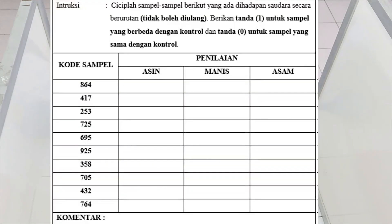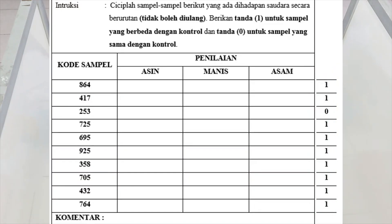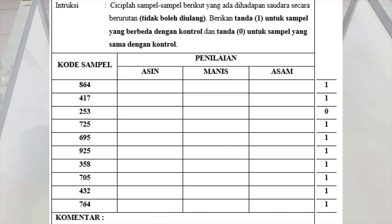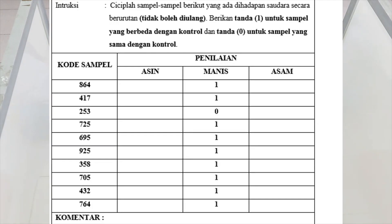Selanjutnya, tuliskan hasil pada bagian sebelah kanan di luar kotak terlebih dahulu. Jika seluruhnya sudah diamati, lalu pindahkan ke kolom kesan baik asin, manis, atau asam sesuai dengan kesan dari setiap sampel yang telah dicicipi. Di sini panelis merasakan rasa manis, maka pindahkan ke tabel kisaran kesan rasa manis. Jangan lupa untuk mengisi kolom komentar dengan sulit atau tidak sulit dalam membedakan.